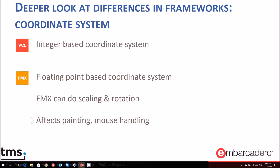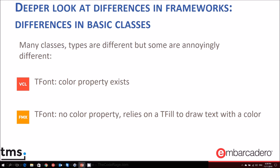Looking at the two frameworks, there are very important differences that will affect our design. The VCL has an integer-based coordinate system, while FireMonkey has a floating-point-based coordinate system. FireMonkey can also do out-of-the-box scaling and rotation of controls, which is not possible in VCL. These major differences will affect how we implement painting and mouse handling.